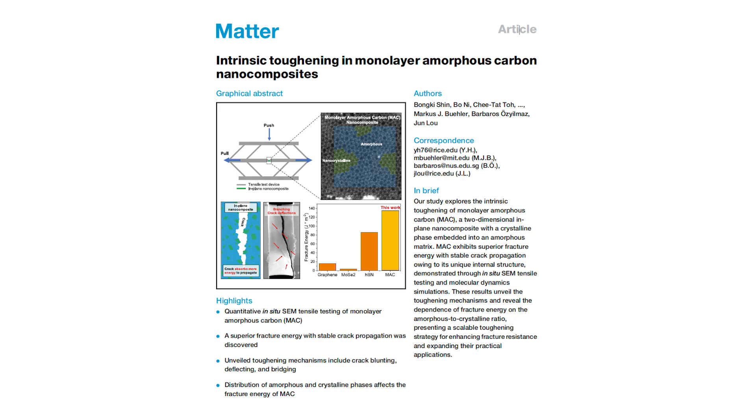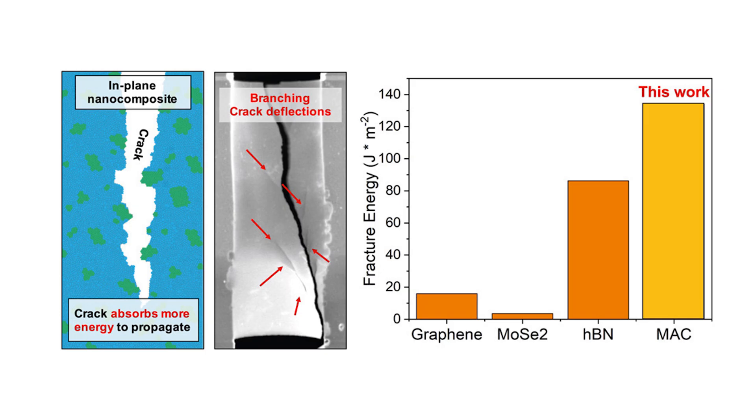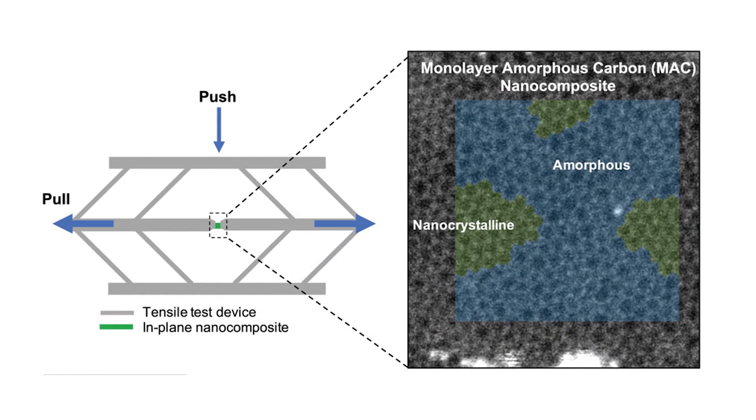And there's another fascinating piece, molecular dynamics simulations. Basically advanced computer models that track the movement of individual atoms, confirm what the experiments suggest. In those simulations, you can actually observe the crack tip traveling from a crystalline region to an amorphous region.